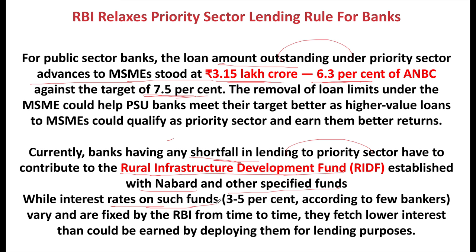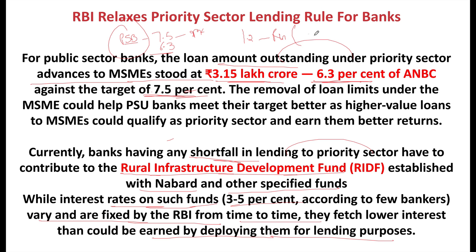Banks with any shortfall in priority sector lending have to contribute that amount to the Rural Infrastructure Development Fund (RIDF) established with NABARD and other specified funds. The interest rate on RIDF funds is only 3 to 5%, which is lower than what banks could earn by deploying funds for lending — typically 10-12%. This is the motivation for banks to advance to the priority sector: if they fall short, they earn less on the shortfall amount.